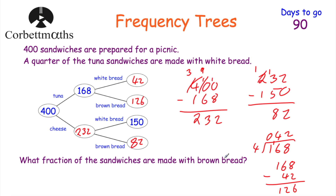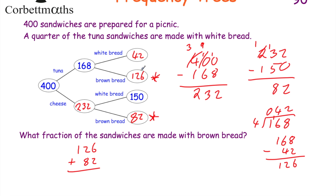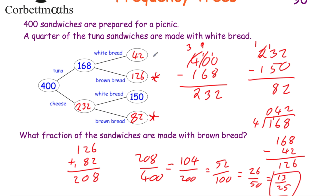The question asks what fraction of the sandwiches were made with brown bread. Adding the brown bread sandwiches together: 126 plus 82. 6 plus 2 is 8, 2 plus 8 is 10 so put down 0 and carry 1, and 1 plus 1 is 2 - giving 208 sandwiches made with brown bread. So the fraction is 208 out of 400. We can simplify: divide by 2 gives 104 over 200, divide by 2 again gives 52 over 100, divide by 2 again gives 26 over 50, and divide by 2 again gives 13 over 25. So 13 twenty-fifths of the sandwiches were made with brown bread. Well done if you got that.